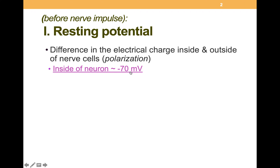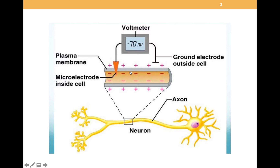What is the purpose of this resting potential — the difference in electrical charge between the inside and the outside of nerve cells, which is just about minus 70 millivolts? Well, the purpose is to be able to send messages between cells, to communicate, so that you can think, feel, and act.